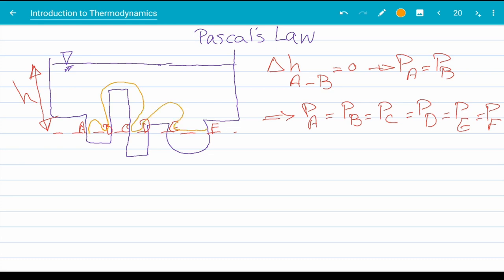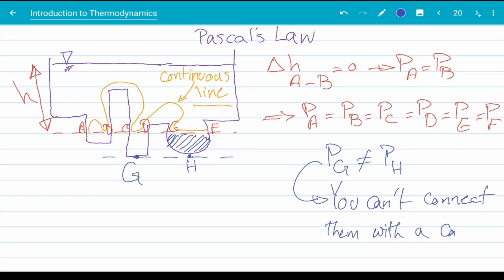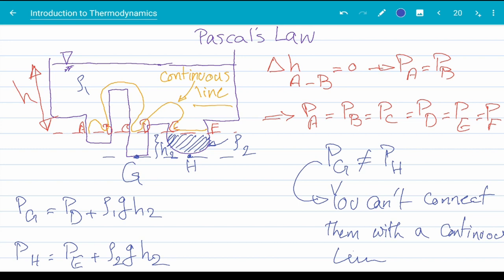Now, if you can't connect your points with a continuous line, they don't necessarily have the same pressure. Let's assume that the circle area on the bottom is filled with a hash liquid with a different liquid that has a different density. Although points g and h are on the same horizontal line, they don't have the same pressure because you can't connect them with a single continuous line. But let's show that with equations too. Now, p of g is equal to p of d plus the weight of the column of the clear liquid between d and g. So, p of g is p of d plus rho 1 g h 2. p of h, on the other hand, is p of e plus the weight of the column of the hash liquid between e and h. So, p of h is p of e plus rho 2 g h 2. You can see that although p of e and p of d are equal, the other terms are not. And so, p of h is not equal to p of g.